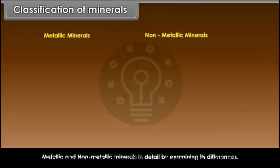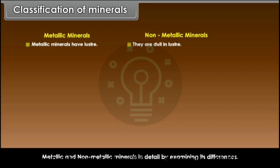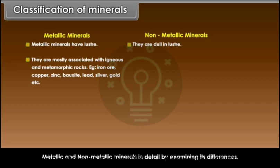Comparing metallic and non-metallic minerals: Metallic minerals have luster, while non-metallic minerals are dull in luster. Metallic minerals are mostly associated with igneous and metamorphic rocks — examples include iron ore, copper, zinc, bauxite, lead, silver, gold, etc.